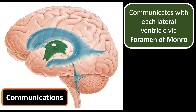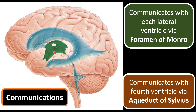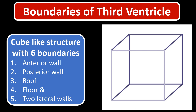The third ventricle communicates with the lateral ventricles in the right and left cerebral hemispheres through a foramen called the interventricular foramen of Monroe. It also communicates with the fourth ventricle via the aqueduct of Silvius. Coming to the boundaries of the third ventricle — it is a cube-like structure with six boundaries: anterior wall, posterior wall, roof, floor, and right and left lateral walls.